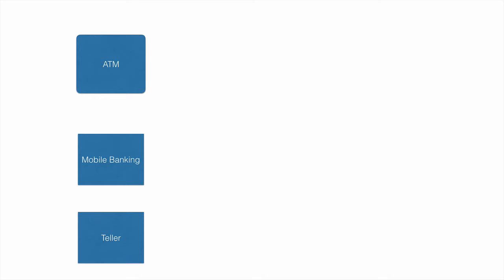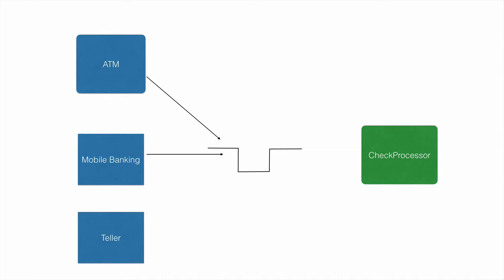For example, let's consider a check processing application wherein we have an ATM, a mobile banking application, and also a teller app which is used by the bankers in the bank. They all use these applications to send checks to a particular destination and our check processing application will process the checks from that destination as a message.